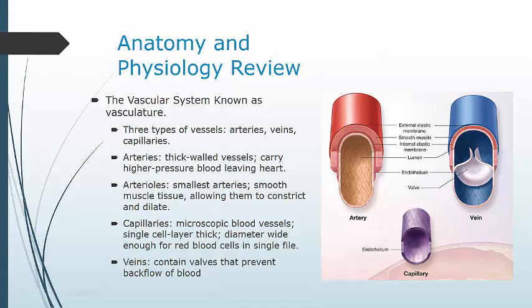Veins carry lower-pressure blood and are thinner-walled than arteries, but they still have the same three layers. They collect blood from the capillary beds, which drains into successively larger veins until it returns to the heart. Veins carry deoxygenated blood, with the exception of the pulmonary veins, which bring oxygenated blood from the lungs back to the left atrium.